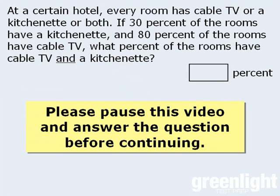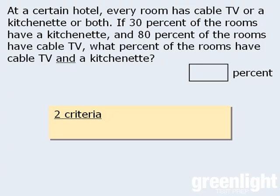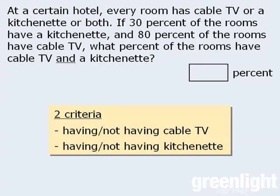Please pause this video and answer the question before continuing. In this question, we want to determine what percent of the rooms have cable TV and a kitchenette. Notice that we have a population of rooms here, and there are two criteria associated with each room: having or not having cable TV, and having or not having a kitchenette.